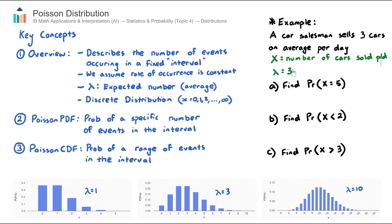Now that we have defined those things, you'll encounter two types of questions: the probability of a specific number of events in the interval. For example, part A, what is the probability that this salesman sells exactly five cars?